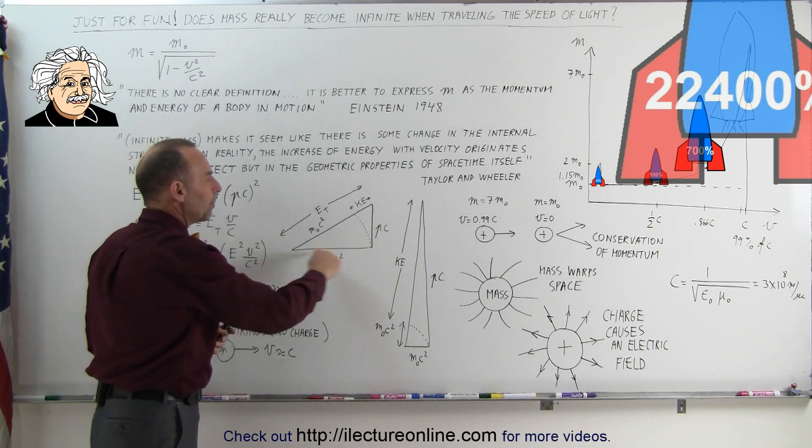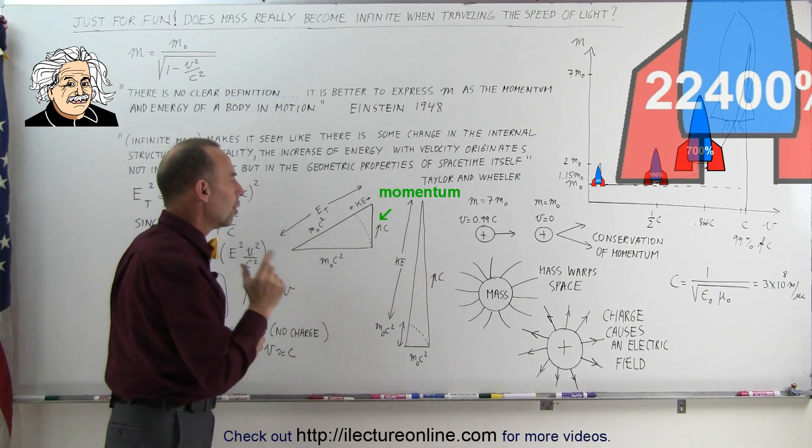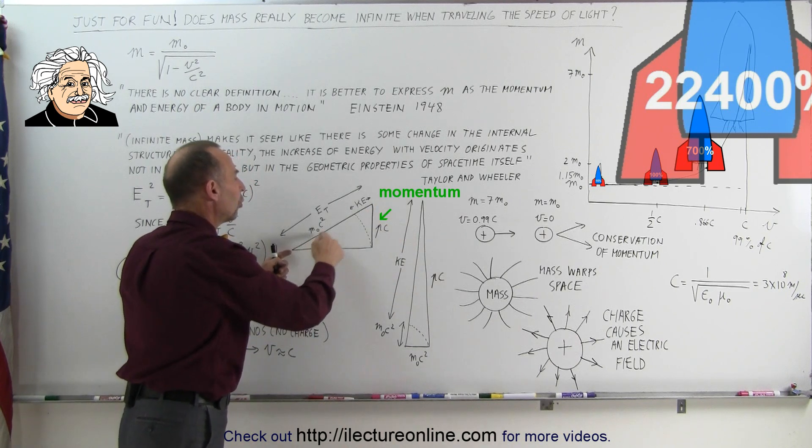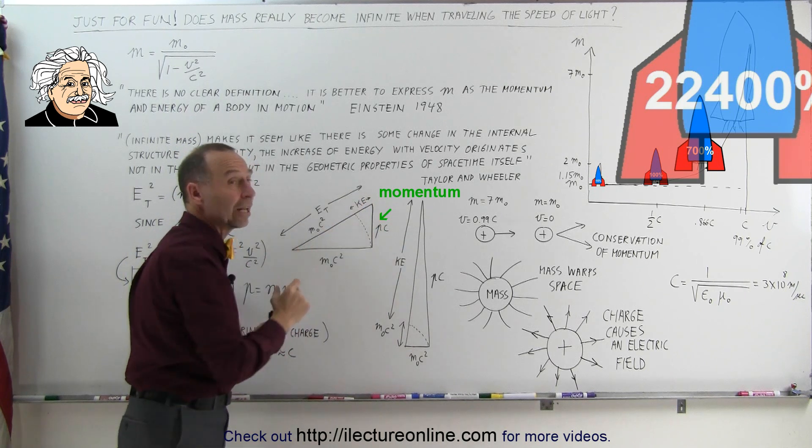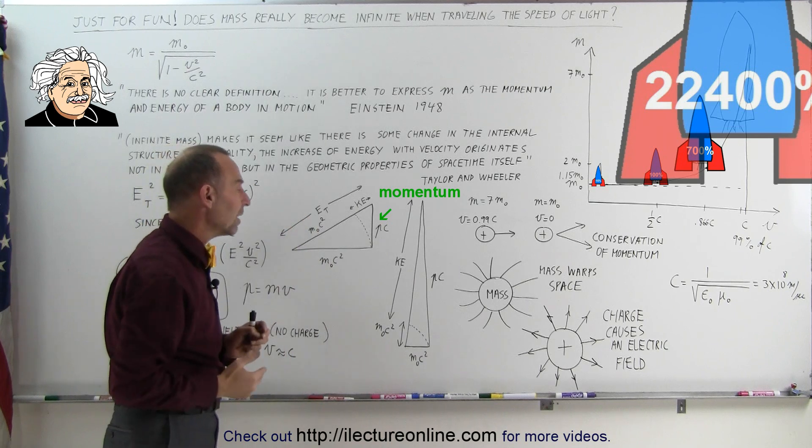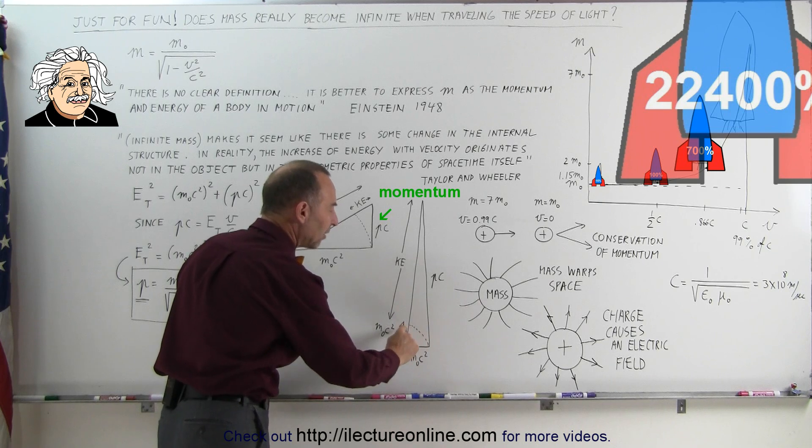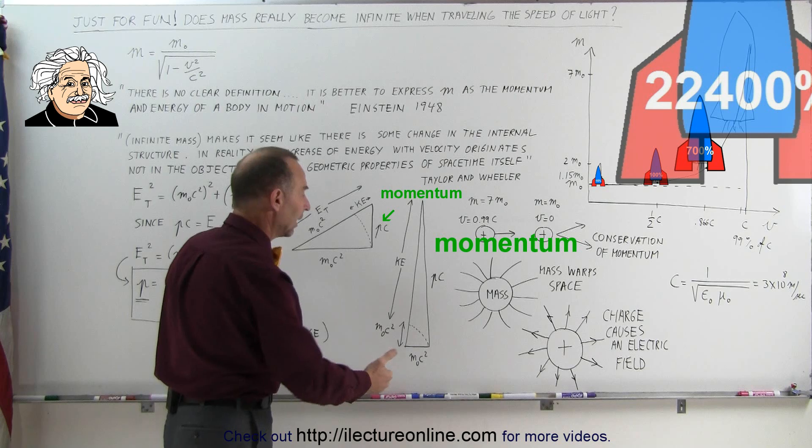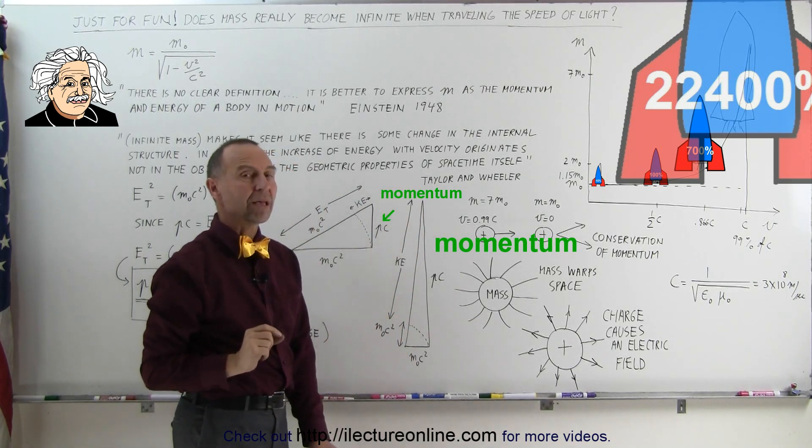So another way of thinking about it is as follows. If this triangle represents the relationship between the rest mass, the total energy of the particle, and the momentum of the particle, notice at small speeds the increase in momentum is relatively small and the total energy of the particle is mostly the rest mass energy and a very small amount of it is the kinetic energy gained by moving faster. But as the speed of the object increases tremendously, notice a very small portion of the total energy is related to the rest mass energy and a very large percentage is caused by the increase in momentum. And so the total energy is primarily the kinetic energy and a very small amount of the rest mass energy.